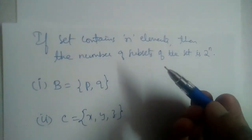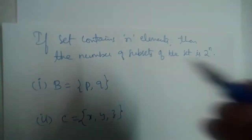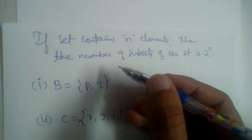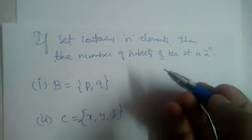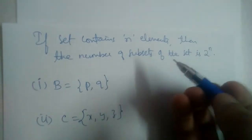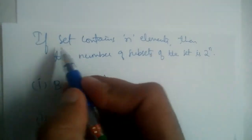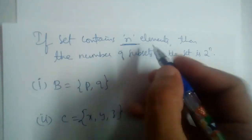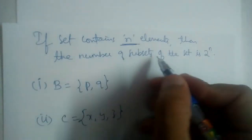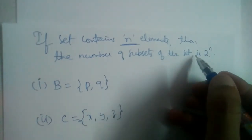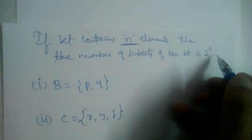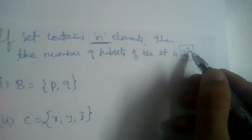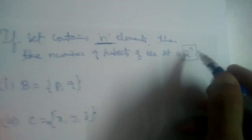In the previous video, we studied what is a set, what is a subset, and what is a superset. Now, in this video, we will learn how many subsets can we write for a given set. We have this formula: if a set contains n elements, then the number of subsets of that set is 2 power n. What is n? The number of elements.